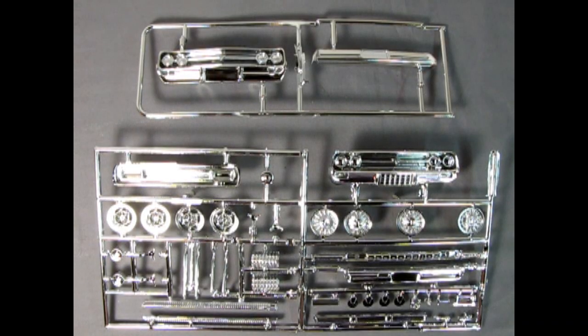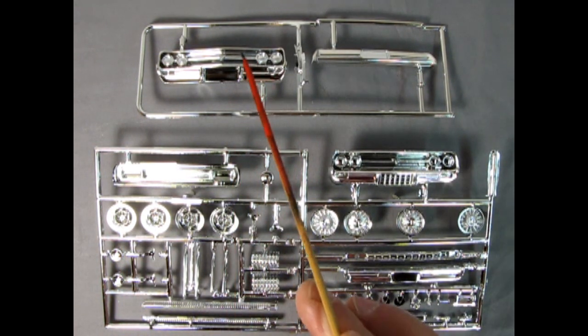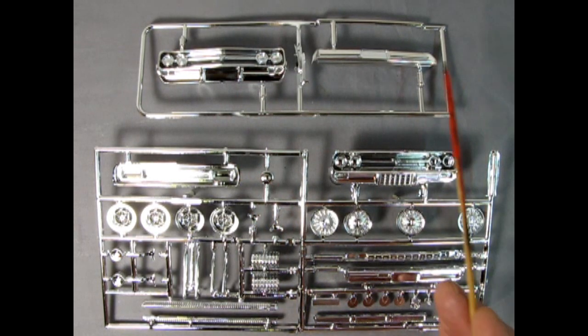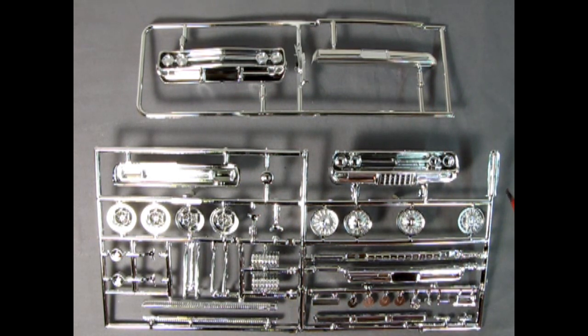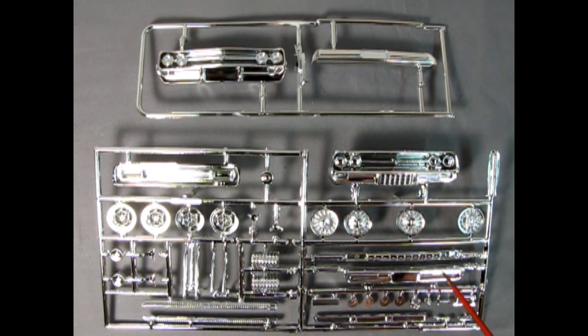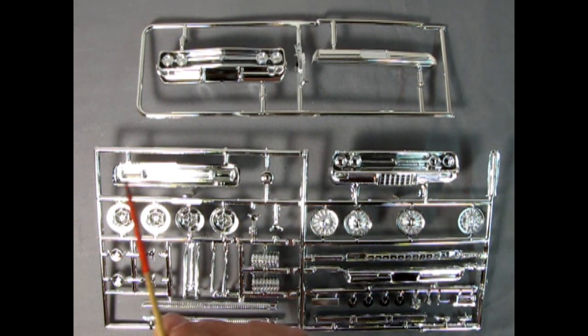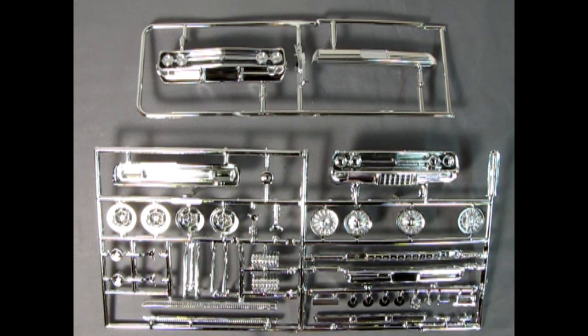Next we take a look at our chrome parts trees and you do get two in this kit. The first one includes the stock grille headlights and bumper as well as the rear bumper and the second includes our racing front grille and our racing rear bumper as well as the chrome insert for the back of the car. Here we have our stock hubcaps and wheels as well as the racing wheels, the custom front grille and our side pipes and all the engine and body components.